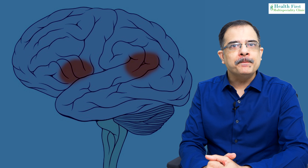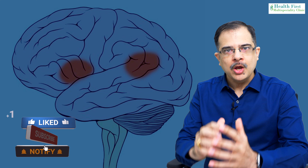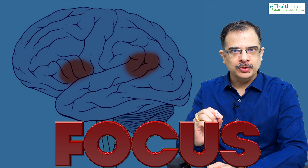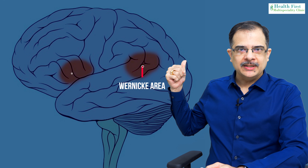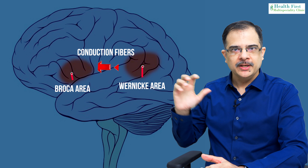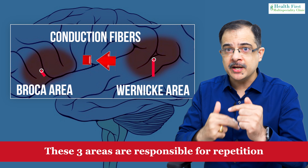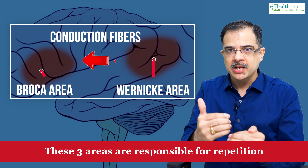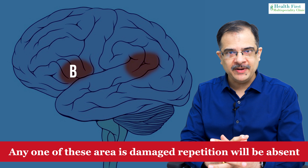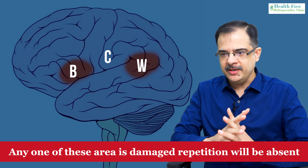So how to make an appropriate diagnosis based on language dysfunction? Starting with the brain areas of language: as you can see in this diagram, on the dominant hemisphere — that is the left side — focus on these areas: Wernicke's, Broca's, and the conduction fibers connecting Wernicke's with Broca's. Remember these three areas are responsible for repetition. If any one of these is affected, repetition will be absent. If Broca's is affected, repetition will be gone; if conduction fibers are affected, repetition will be gone; if Wernicke's is affected, repetition will be absent.